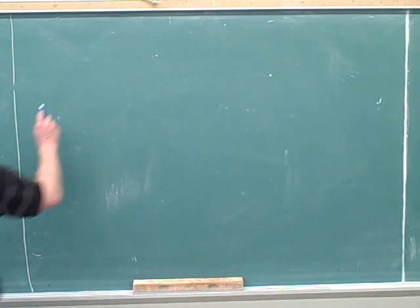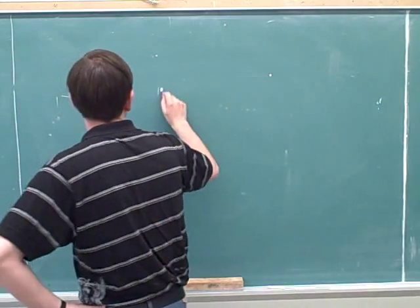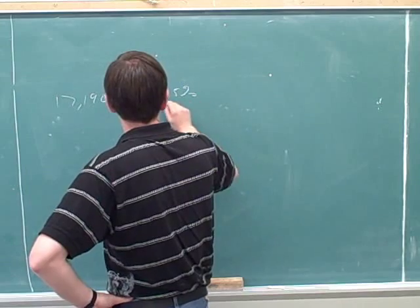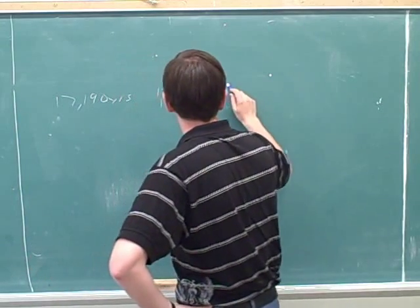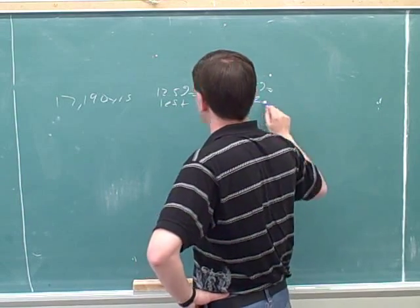Um, 86.5. That's right. So in that same time period, 17,190 years, we would have 12.5% left and 87.5% gone.